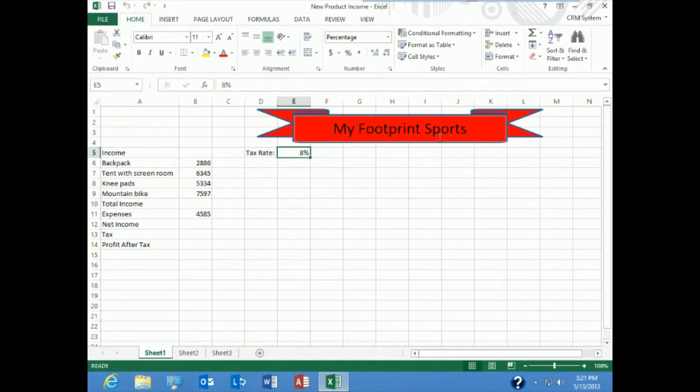And the management of My Footprint Sports has planned to introduce four new products. And what we need to determine is if the income from these products is going to be substantial. We're going to estimate our sales data, our expenses, our taxes, and figure out what our profit is going to be after taxes. So notice we have our raw data that has been entered, but we have no computations, no formulas.